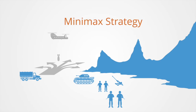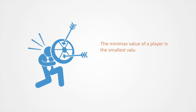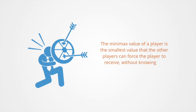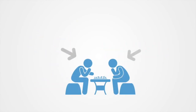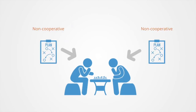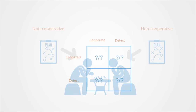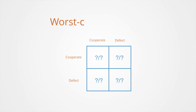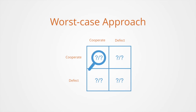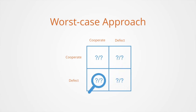Minimax is a decision rule for minimizing the possible loss for a worst-case scenario. The minimax value of a player is the smallest value that the other players can force that player to receive without knowing the agent's actions. A minimax strategy is commonly chosen when a player cannot rely on the other party to keep an agreement, or when the other party has an interest in the player gaining the minimum payoff, such as in a zero-sum game. Calculating the minimax value is done using a worst-case approach: for each possible action of the player, we check all possible actions of the other players and determine the worst possible combination — the one that gives the player the smallest payoff — then determine which action the player can take to make sure that this smallest value is the largest possible.